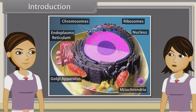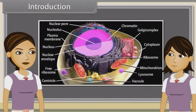I think we have completed all the topics. No Madhuri, there are some more topics to be learned. They are: structure of cytoskeleton, cilia and flagella, centrosomes and centrioles, nucleus and microbodies. So come, let's know about them in this module.